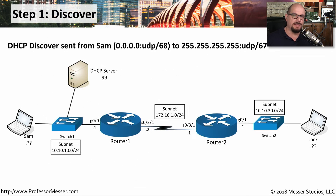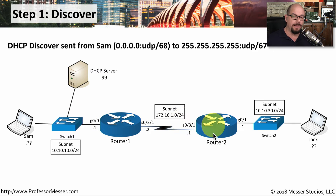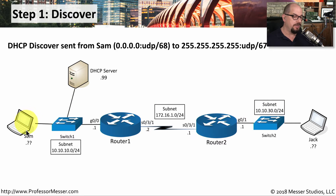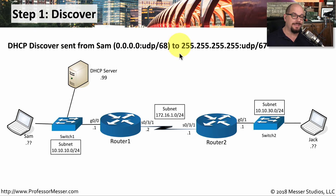Let's step through every process of the DHCP leasing. We have a network here that has SAM — there's a switch and a subnet associated with SAM's machine, and there's a DHCP server on that subnet as well. There's a router that connects over a wide area network link to another network where Jack has a laptop computer, but there's no DHCP server on that particular subnet. Let's focus on SAM's machine. SAM starts her laptop — the first step is a DHCP discover message. Currently, SAM does not have an IP address; she's just turned on her laptop. So a broadcast is sent across the network to UDP port 67.